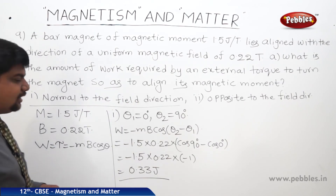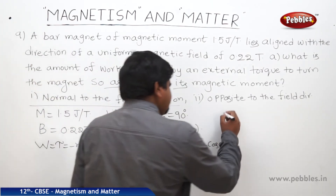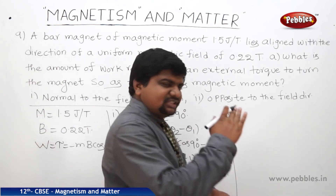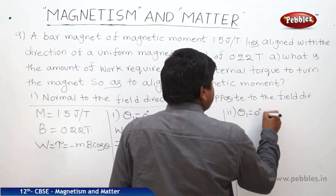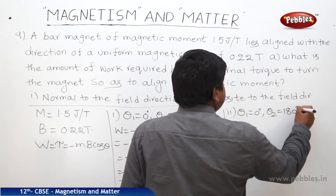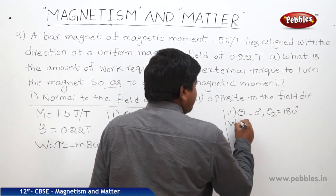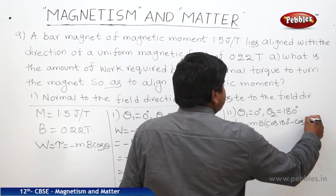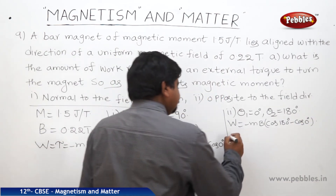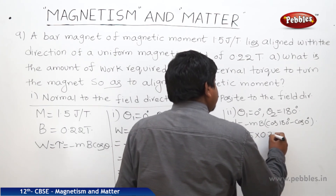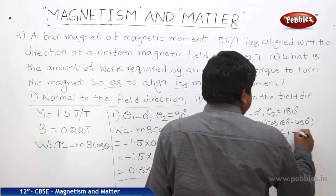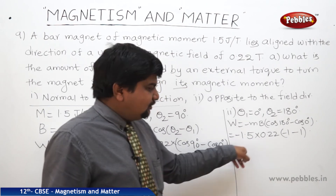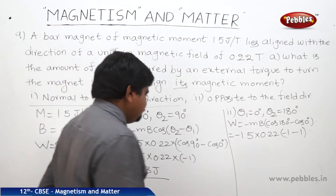For the second case, aligning the magnetic moment opposite to the field direction: theta_1 = 0°, theta_2 = 180°. W = −mB(cos 180° − cos 0°) = −1.5 × 0.22 × (−1 − 1) = −1.5 × 0.22 × (−2) = 0.66 joules.